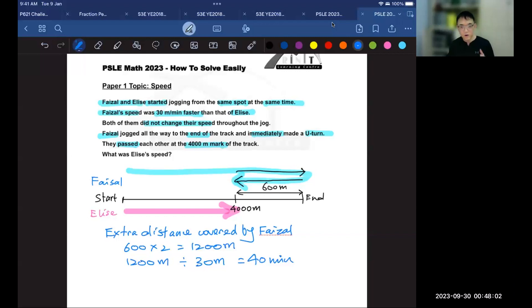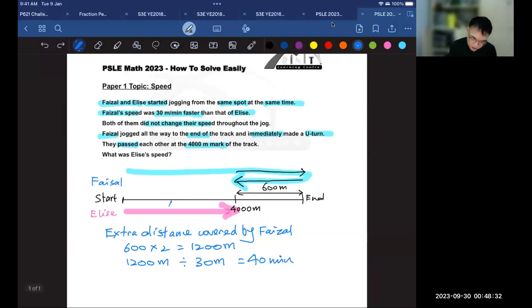So if Faisal took 40 minutes to travel an extra 1,200 meters, it also means that Faisal traveled 40 minutes. And since Faisal traveled 40 minutes, and Elise traveled for the same amount of time, then Elise also traveled for 40 minutes. So now we know that Elise's time taken to travel 4,000 meters is 40 minutes.